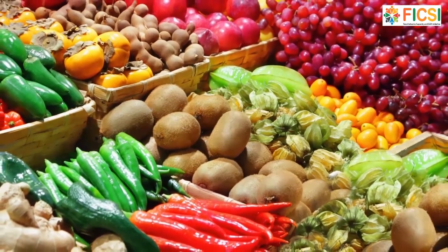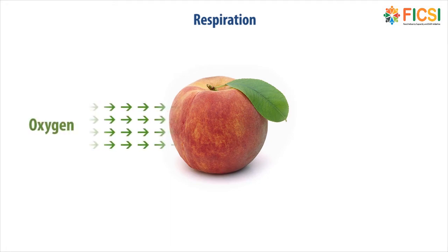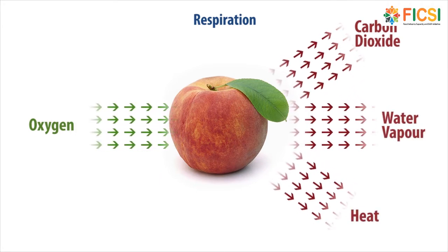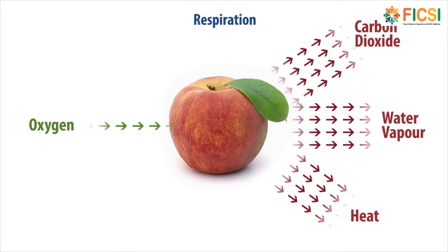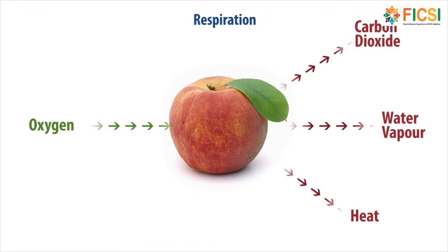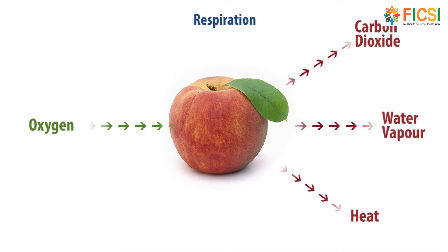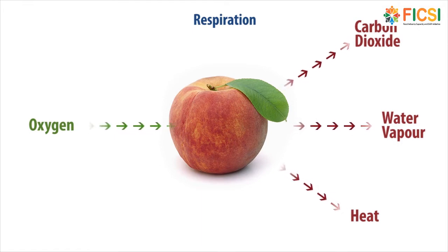Fruits and vegetables breathe much like humans in a process called respiration. The produce consumes oxygen from the surrounding air and gives off carbon dioxide, along with water vapor and some heat. By lowering the amount of oxygen in a sealed enclosure, the rate of respiration can be retarded, thus holding the produce in a state of suspended animation. Each type of fruit or vegetable requires a specific amount of oxygen and carbon dioxide to keep it in suspension.